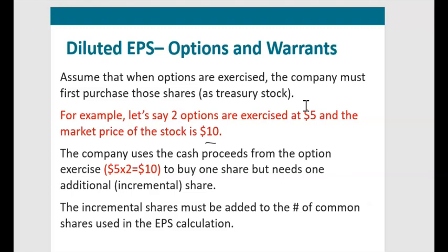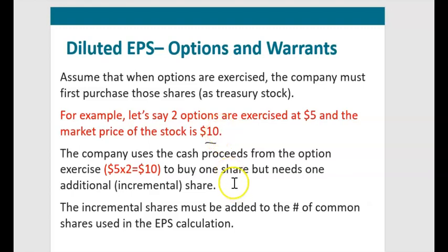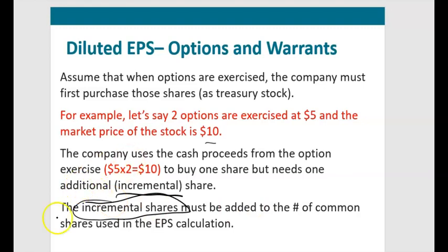Here's a simple example: two options are exercised at an exercise price of $5 each, so the company receives $10. The market price of the stock is $10. The company can only afford to buy one share of treasury stock with that $10. So the company needs to issue one additional incremental share — only these incremental shares are used as the adjustment in the EPS denominator.